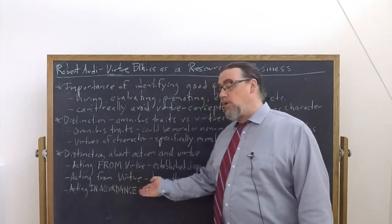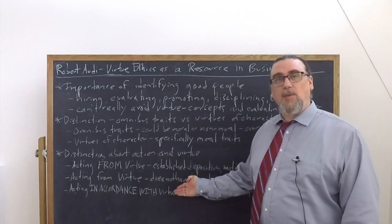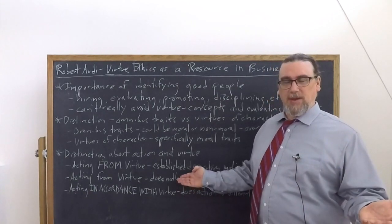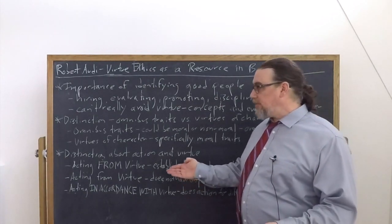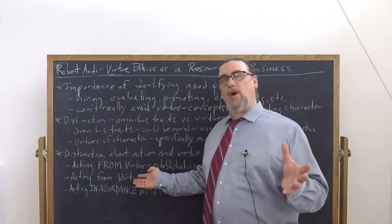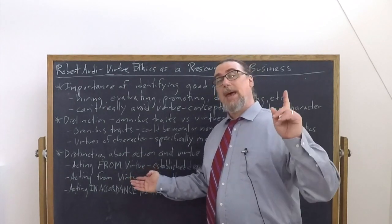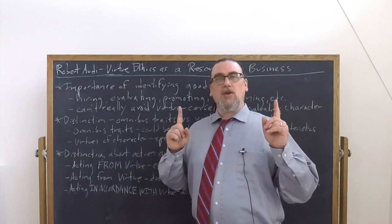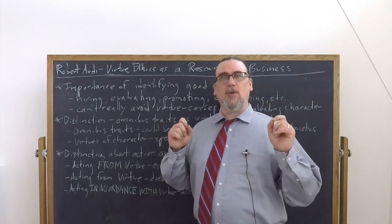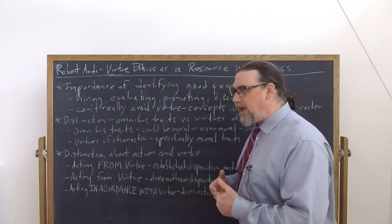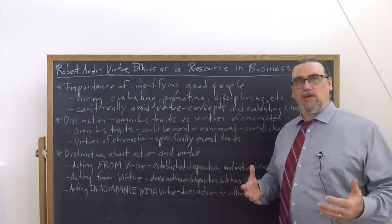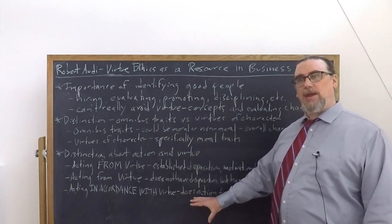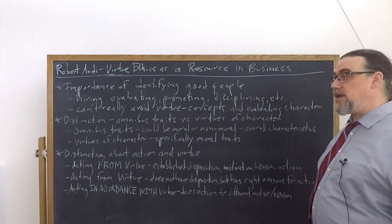It's good to act in accordance with virtue, even if you're doing it for the wrong reasons, because it's still a good act. It's just not as good as it could be. It's even better to be acting from virtue, but in some way where you don't yet have the disposition. Best of all is to be acting from virtue because you actually have the disposition and you are a just person. You are an honest person. You are a diligent person. You are a loyal person. So we can make these moral distinctions. These are all good, but some are better than others.